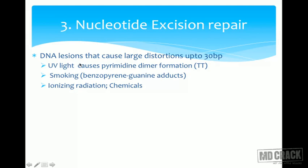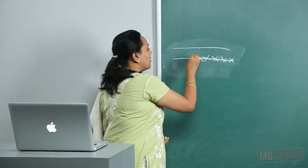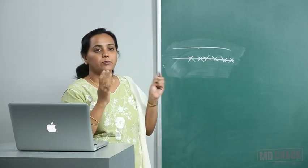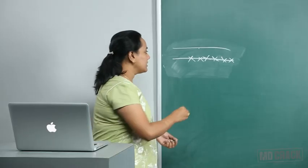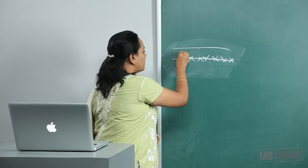Nucleotide excision repair (NER) applies to DNA lesions that cause large distortions — up to 30 base pairs of error. When there is a large error, such as from smoking (benzopyrene and guanine adducts) causing large distortions, or UV light causing pyrimidine dimer formation — for example, a T-T thymine dimer — then nucleotide excision repair is used.